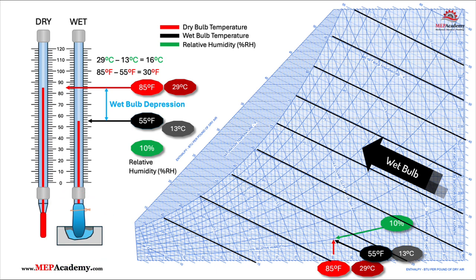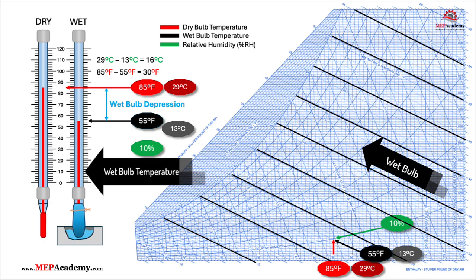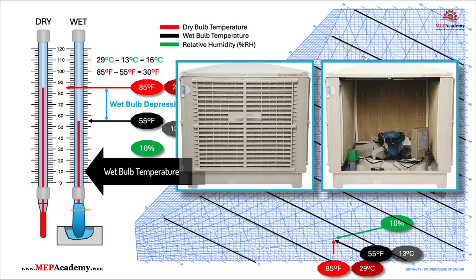As water evaporates, the temperature drops, and this lower reading is the wet bulb temperature. Wet bulb temperature helps assess the amount of moisture in the air, and it is used in processes like evaporative cooling to determine the cooling efficiency in such systems.